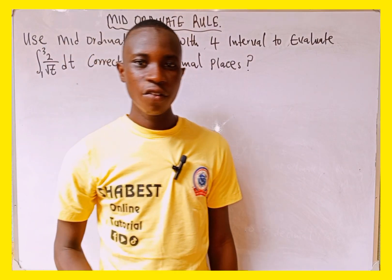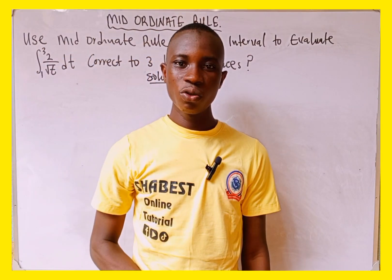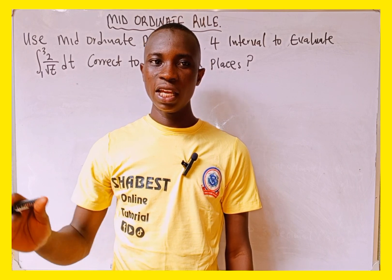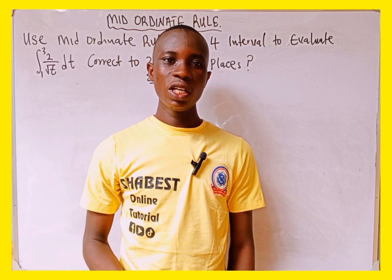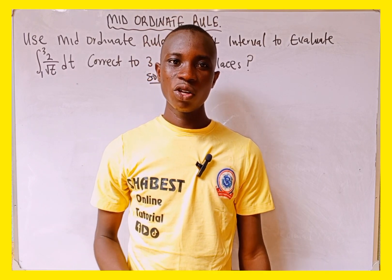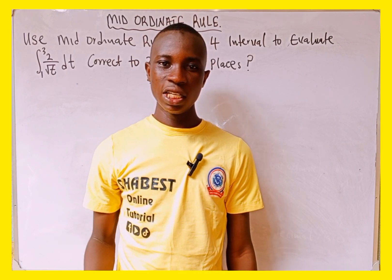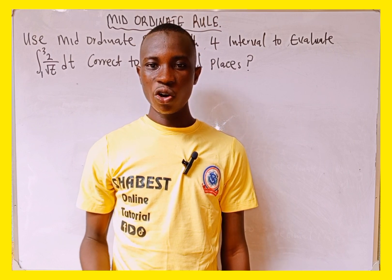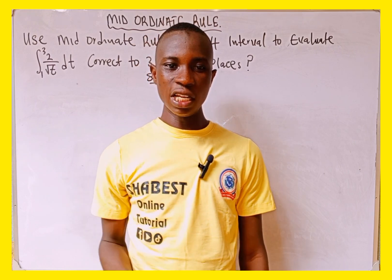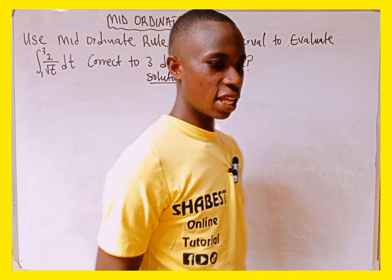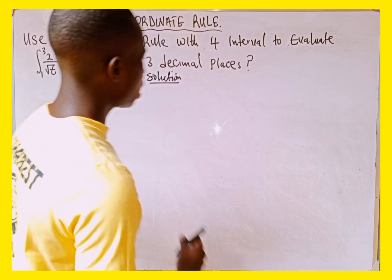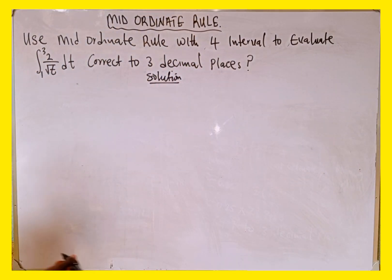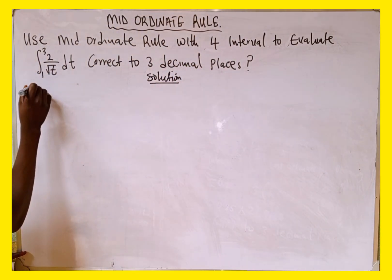Let's get started with the solution. If you are using the mid-ordinate rule to evaluate an integral, the first thing we are going to do is get the width of the interval. After getting the width of the interval, we get the ordinate, and after getting the ordinate, we get the mid-ordinate.